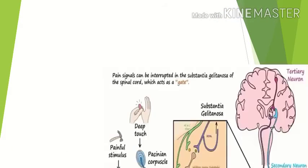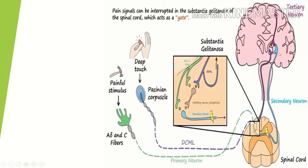Pain signals are transmitted from the periphery to the CNS by A-delta fibers or C fibers, which make up the primary neuron. This primary neuron synapses with the secondary neuron in the substantia gelatinosa of the spinal cord. The secondary neuron crosses to the opposite side of the spinal cord and ascends contralaterally to the thalamus by way of the spinothalamic tract, then synapses with the tertiary neuron, which extends from the thalamus to the post-central gyrus of the parietal lobe. When the signal reaches this area, the person becomes consciously aware.